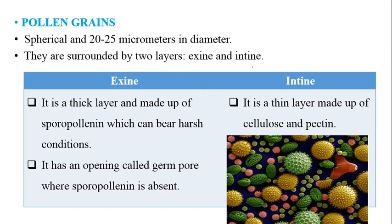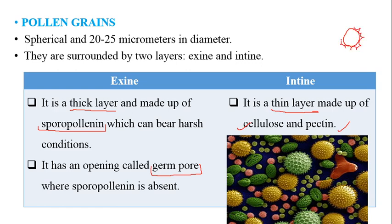The pollen grain is surrounded by two layers: exine and intine. Exine is a thick outer layer made up of a chemical known as sporopollenin, which is very tough and forms a protective sheet around the pollen grain so that it is capable of surviving in the harshest conditions. This covering of sporopollenin has an opening known as the germpore, which is the opening from where the pollen grain will germinate. When it reaches the female reproductive part called stigma — a sticky place — it will germinate through the style, reach the ovary, and deposit the male gametes. The inner layer is the intine, which is made of cellulose and pectin.